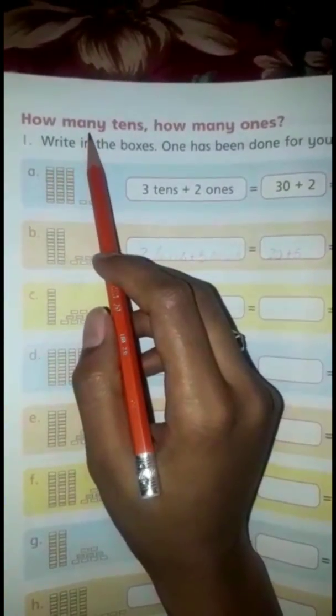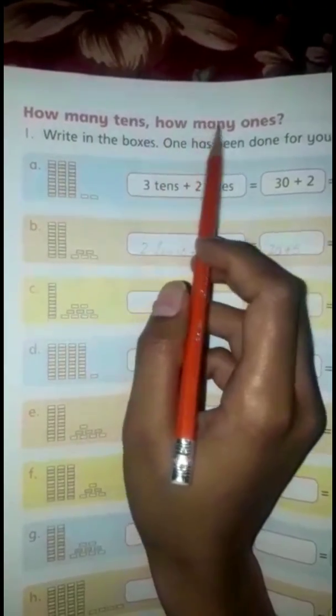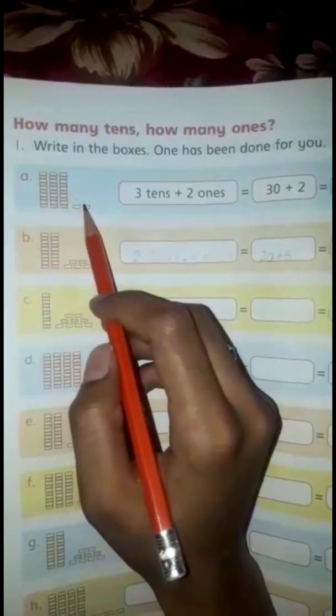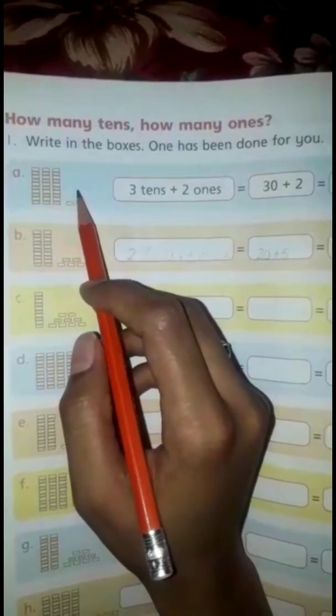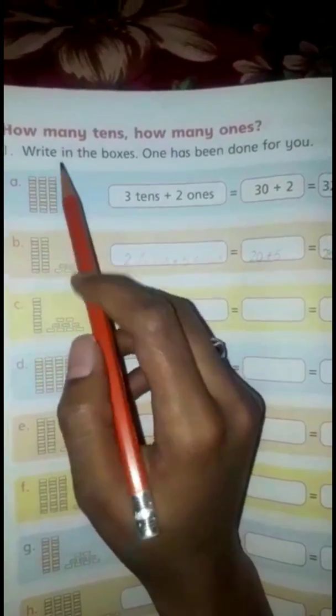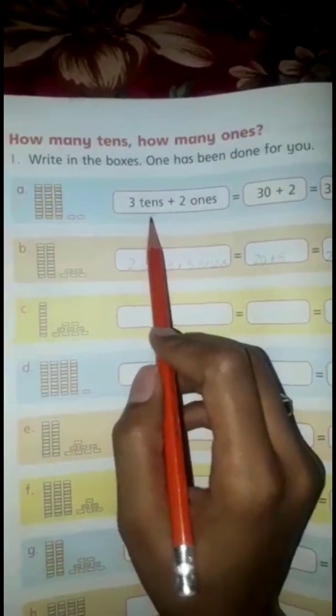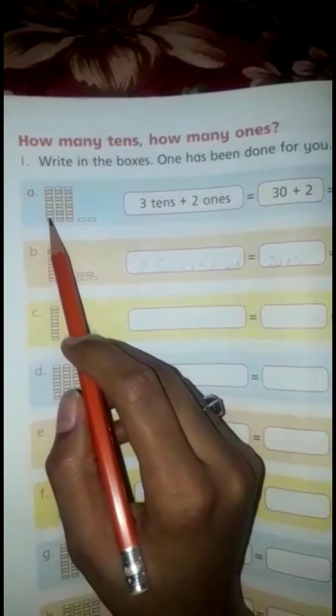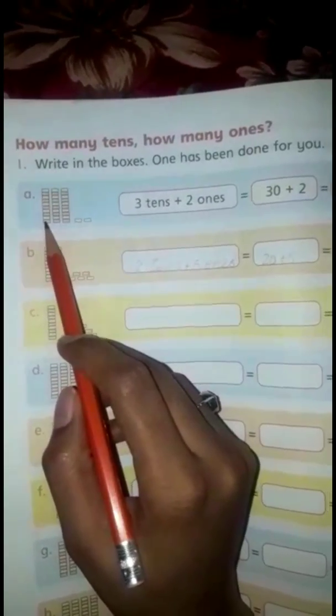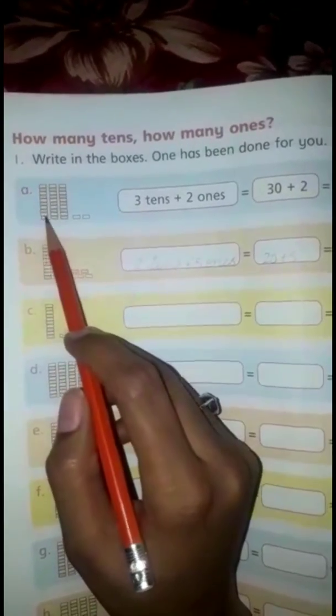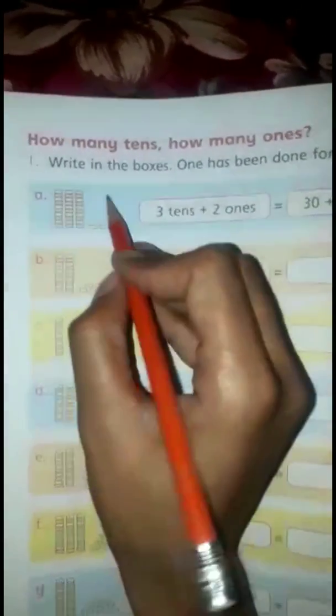Now the question will change: how many tens, how many ones? You will tell how many tens and how many ones are in the stack that is given. Then you will write in the boxes. If you have three stacks, when you count the boxes one by one, you will see that you will have 30.